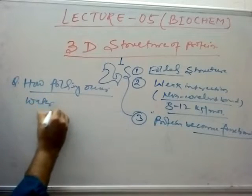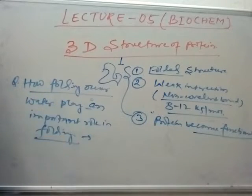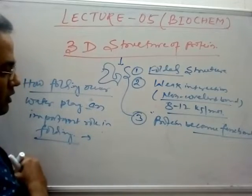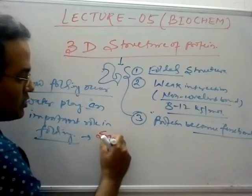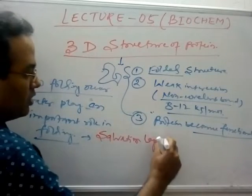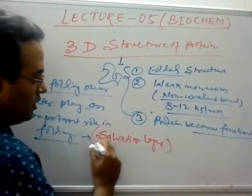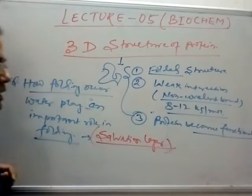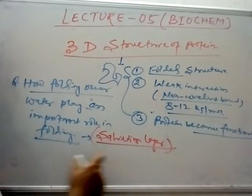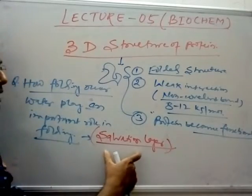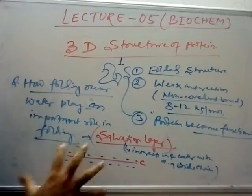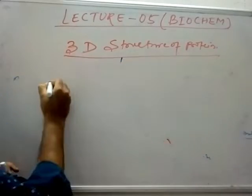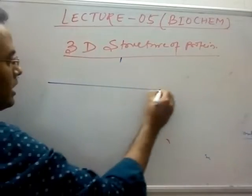Water's role involves the formation of something called a solvation layer. The solvation layer is a layer of water which is interacting with the exposed amino acids. Let us take one example — suppose we have an N-terminus and C-terminus with certain amino acids.